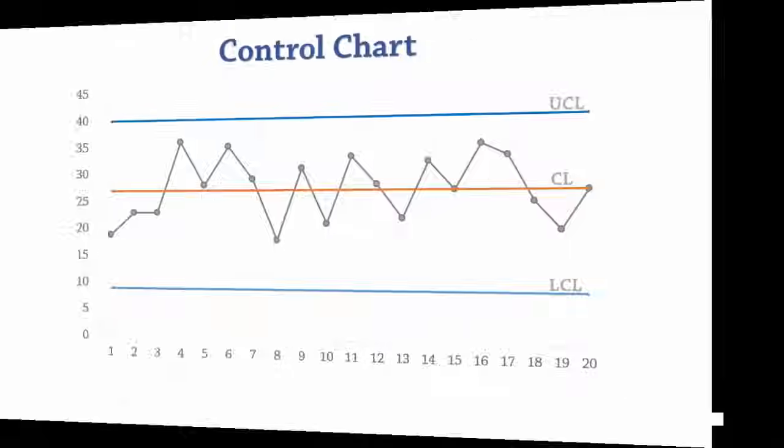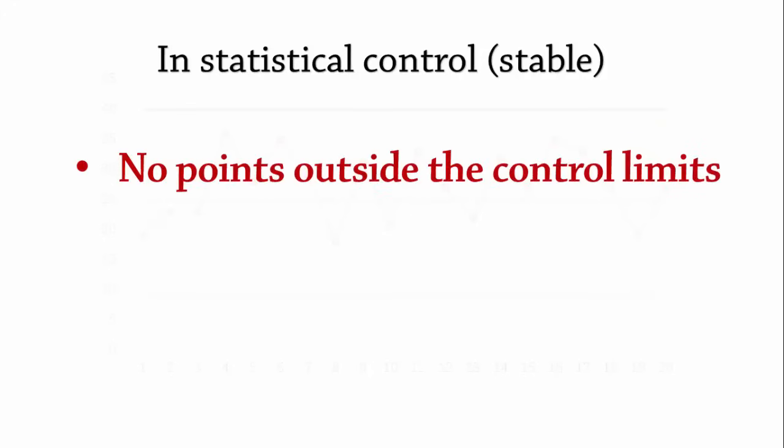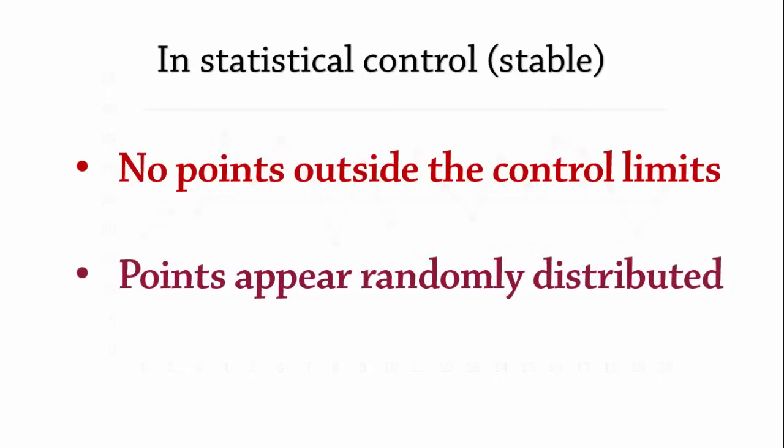For the purpose of this video, we will say that the process is in control if there are no sample points outside the lower or upper control limits. And number two, the sample points appear randomly distributed. That is, there is no trend or other unusual behavior.